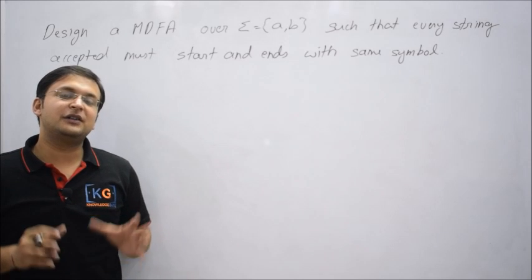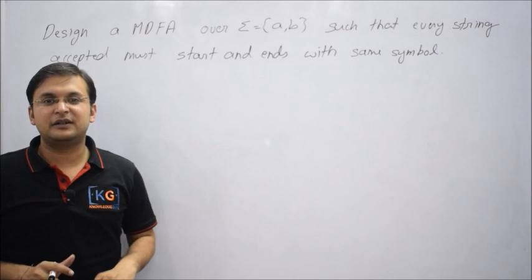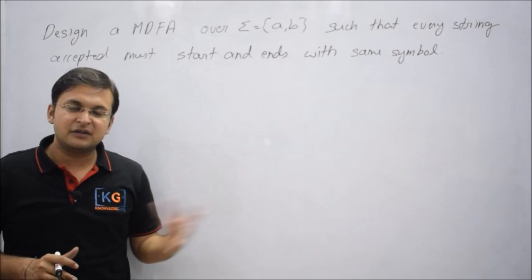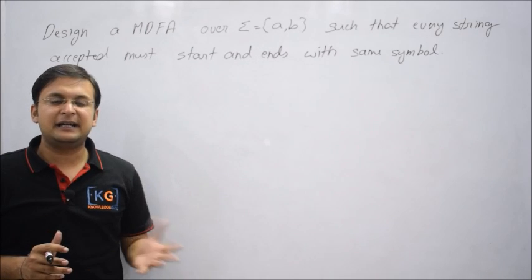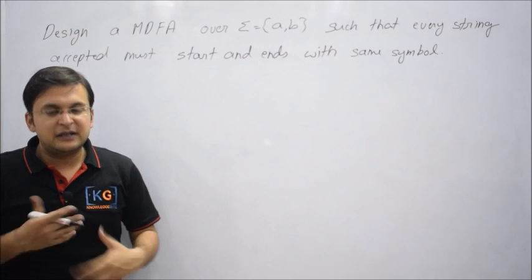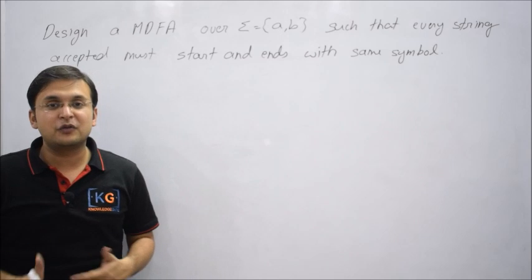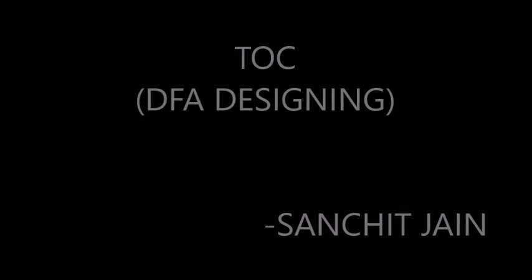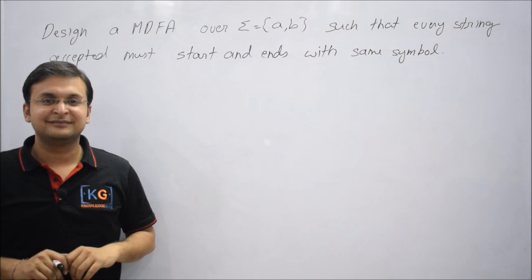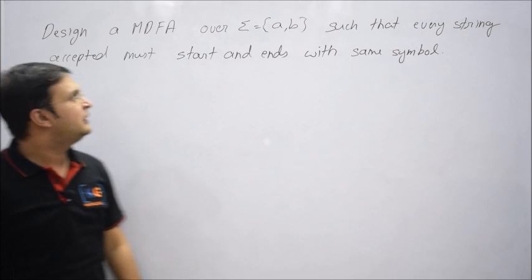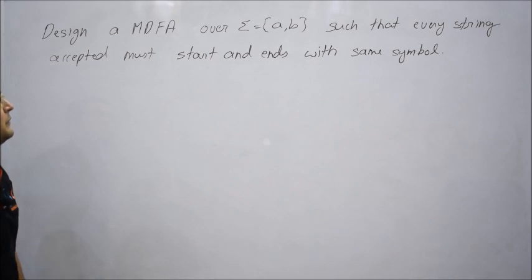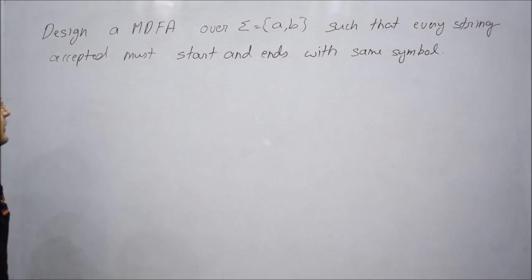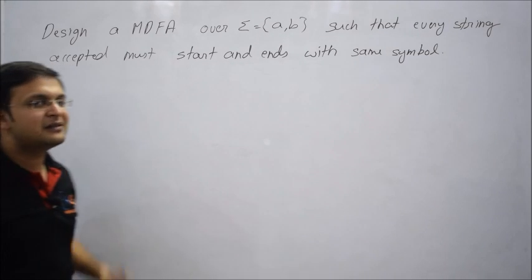Hello friends, in this series of videos on theory of computation, we are doing designing of DFA. In the last video we designed a DFA starting and ending with A. Now let's try some more questions using the same logic. The question says: design a minimal DFA over alphabet {A, B} such that every accepted string must start and end with the same symbol.